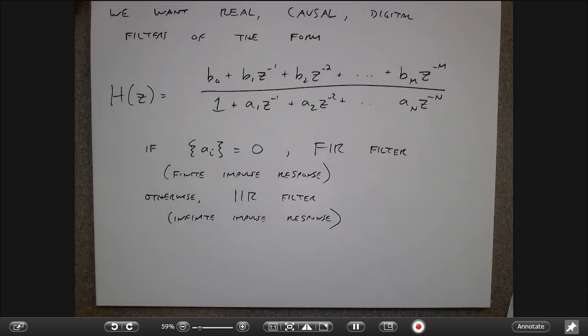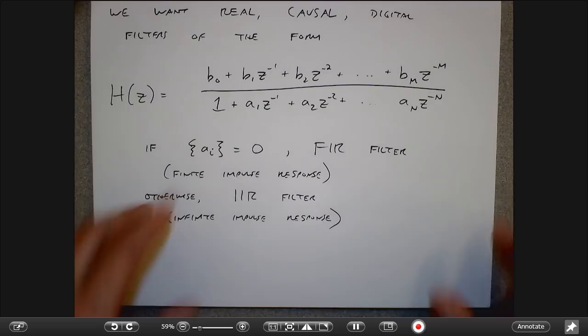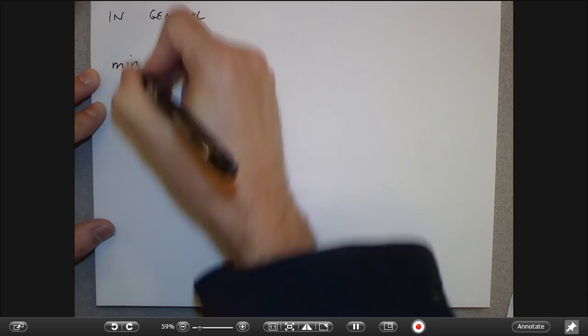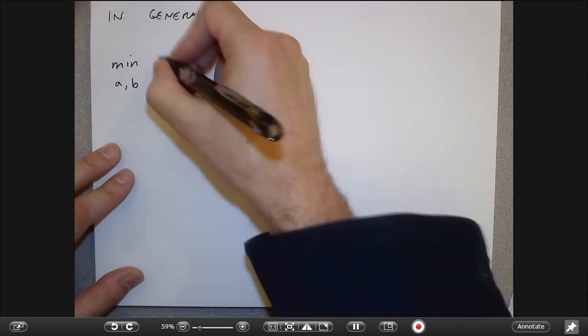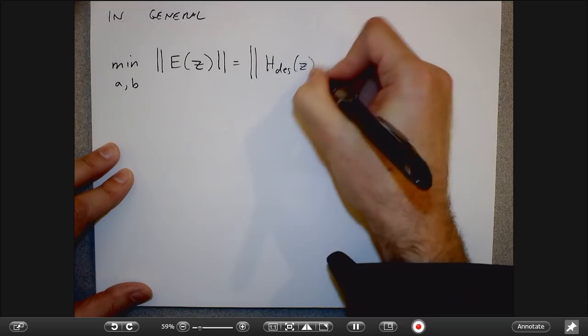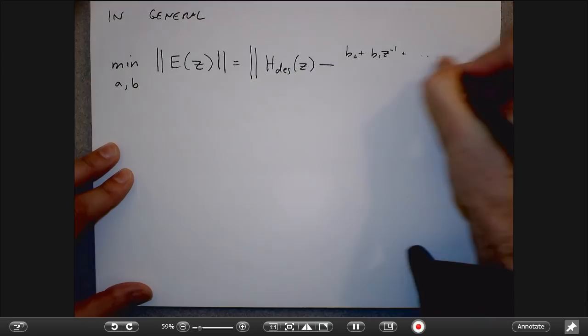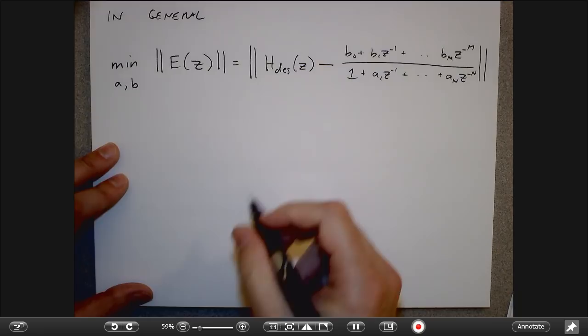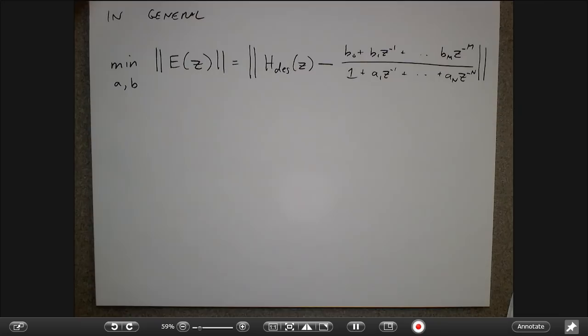What we need to do is minimize over the set of A's and B's some norm or distance function of the error — the difference between the desired transfer function and the transfer function we have. We'll talk today about different choices for this norm or distance function. Additionally, we'll restrict our attention to linear phase filters because linear phase is good.